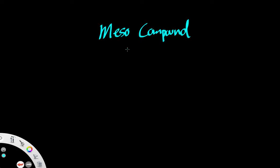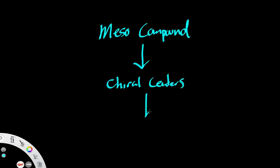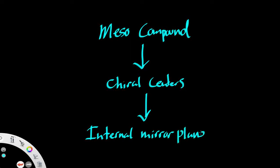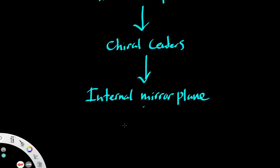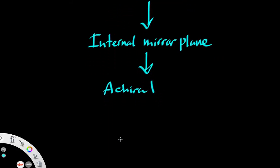By definition, a meso compound is an isomer that has chiral centers but an internal mirror plane that makes it achiral. So we know that we have chirality — our chiral centers. However, it has an internal mirror plane, and ultimately that internal mirror plane makes the molecule as a whole achiral. So that's just a brief intro into meso compounds and explaining the definition.